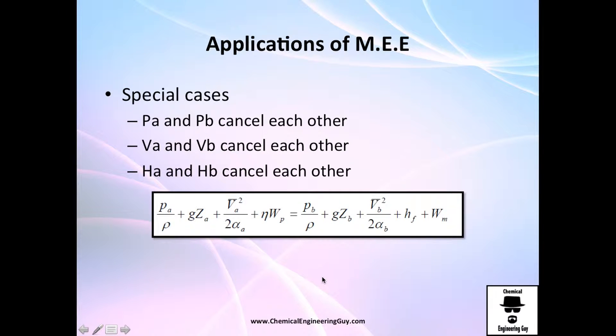Let me show you some very special cases. The first case will be when Pa and Pb, the pressures, cancel each other. It's kind of common. This happens when you have open reservoir, for example the atmospheric pressure here, and whatever you do, you finish and you throw away the water here, and this also atmospheric pressure. So the final pressure and the initial pressure is the same, so they cancel each other.